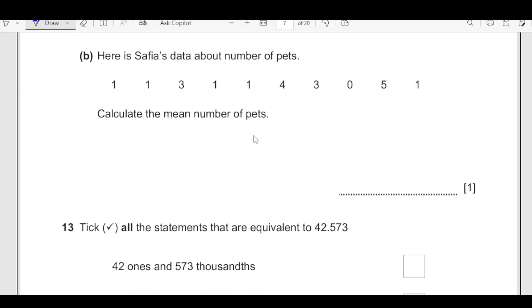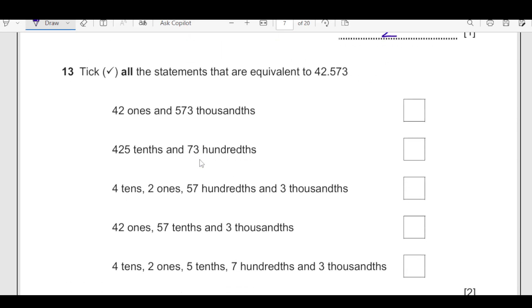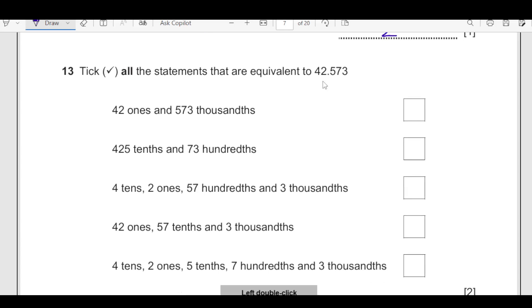Here is Safiya's data about number of pets. Calculate the mean number of pets. To find out the mean, we are going to add all of them 1 plus 1 plus 3 plus 1 plus 1 plus 4, add all the numbers. Then you divide it by the number of numbers. Let us see how many are they? They are 1, 2, 3, 4, 5, 6, 7, 8, 9 and 10. So divide by 10. Just add it by the calculators 20 over 10. So final answer is 2.